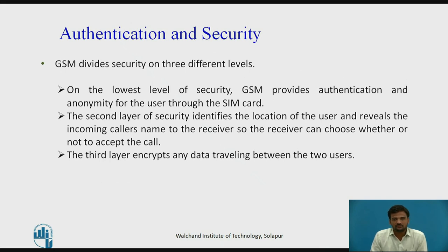GSM divides security into 3 different levels, each providing mechanisms for anonymity, authentication, confidentiality, or integrity. At the lowest level, GSM provides authentication and anonymity through the SIM card; billing and authentication are verified through the SIM chip. The second layer identifies the user's location and reveals the incoming caller's name. The third layer encrypts all data travelling between the two users, providing secure integrity and confidentiality.